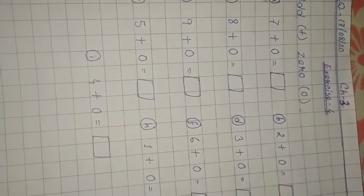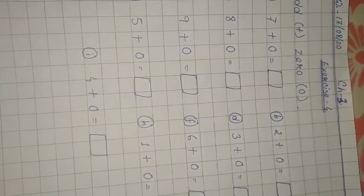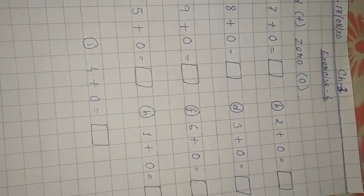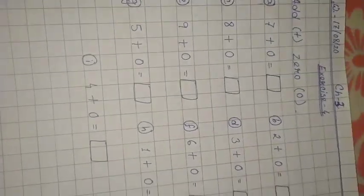For example, 3 plus 0 equals 3. 0 plus any number is the same number, is it not? Let's start this exercise in copy.